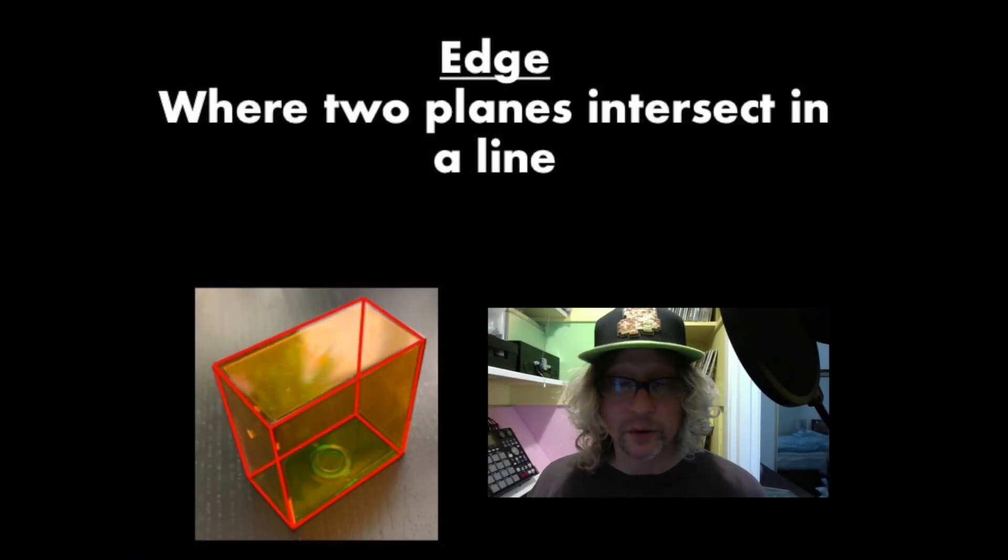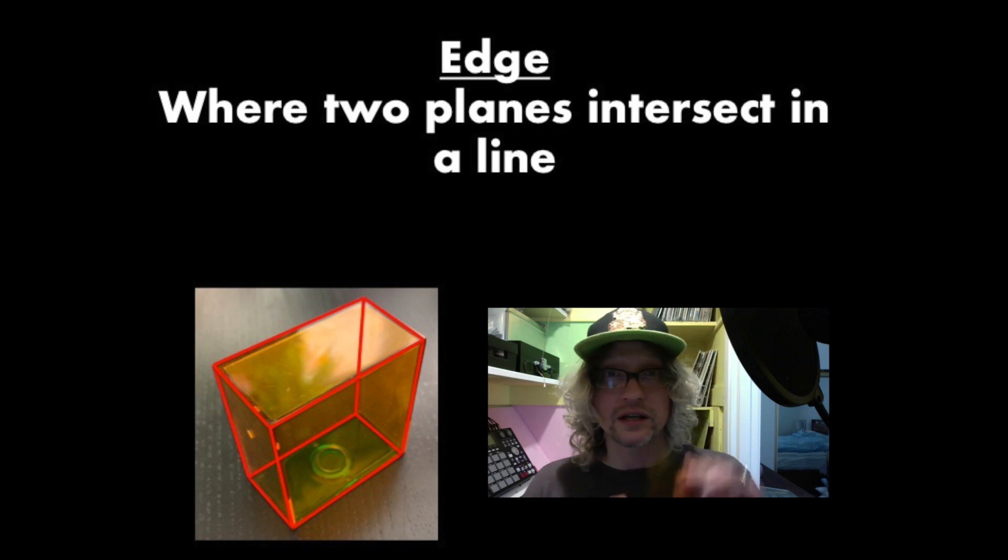Our next vocabulary word is edge. And our definition is going to be where two planes intersect in a line. So if you look at the diagram next to me there, I have highlighted the edges in red.